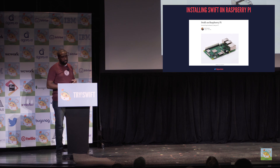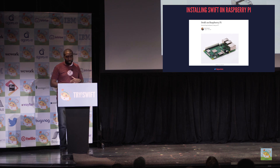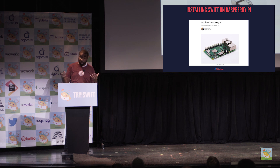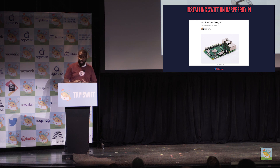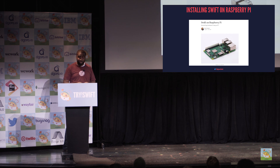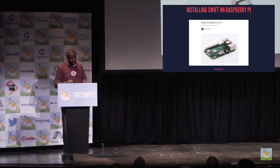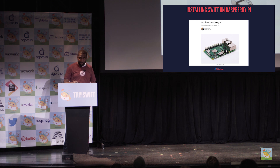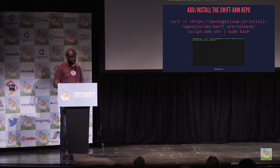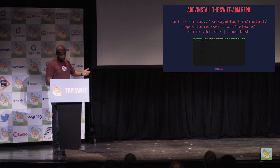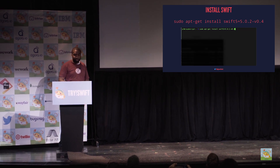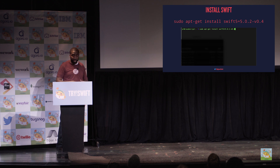Recently, I wrote a blog post covering this at a very high level. There are two ways to install Swift: you can either build Swift yourself or use pre-compiled binaries. I would highly recommend option two because the first option will take several days on the Raspberry Pi. The pre-compiled binaries are possible because of the work of the Swift ARM group, who have put together a repository that allows you to install Swift using the Advanced Package Tool, or APT for short. The first step is adding the Swift ARM repo to your Pi via a curl script, and then it's just a matter of specifying the version of Swift that you want — and you're done.